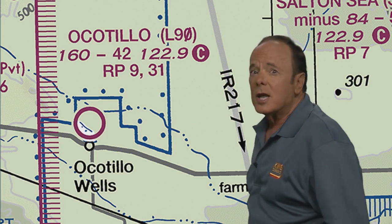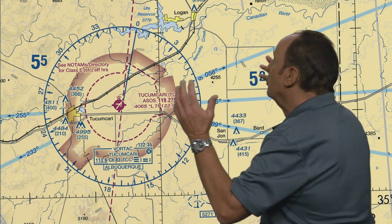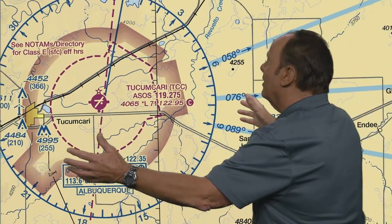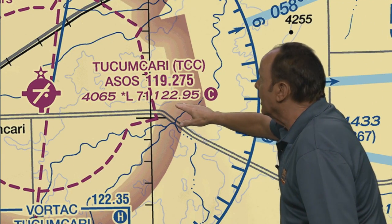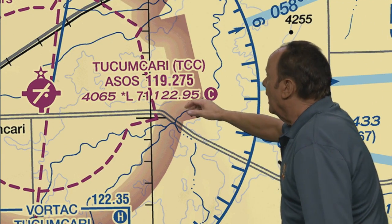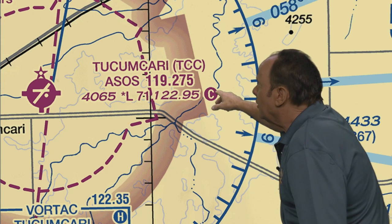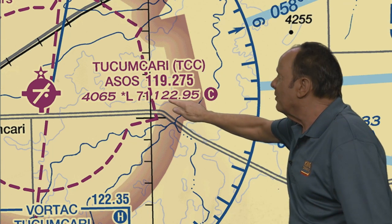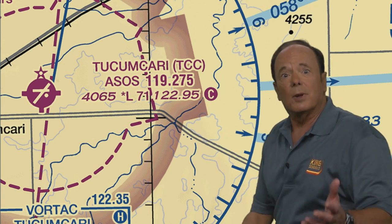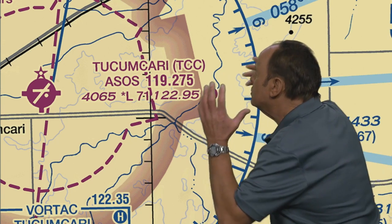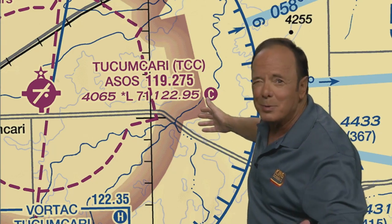Now let's take a look at another one of these. This is Tucumcari, New Mexico — one of my favorite places. The frequency here is 122.95. You see that little C surrounded by shading, and that tells you that's the common traffic advisory frequency. The FAA says if you're going into a place, even a place this remote, they want you to use the radio and tell people what you'll be doing.